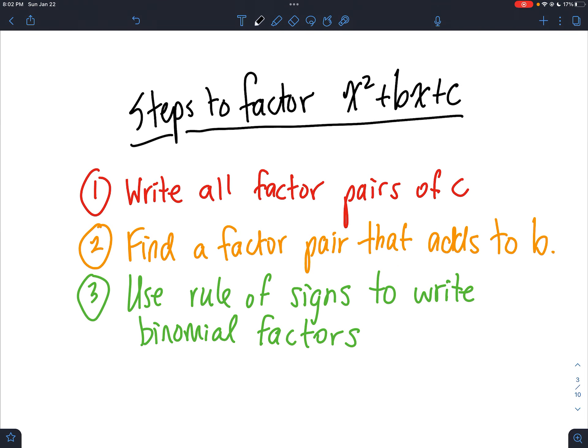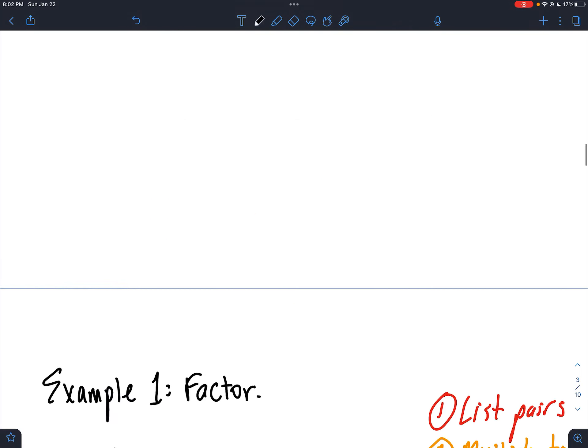So what are the steps? Well, you write out the factor pairs of C. You pick one of them. Pick a pair that adds to B. And use the rule of signs, which we'll talk about, to write binomial factors and get your answer.